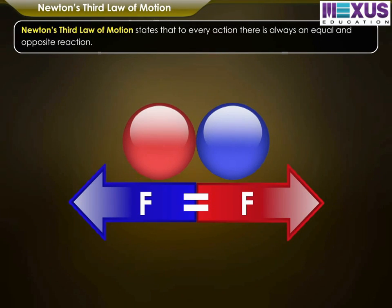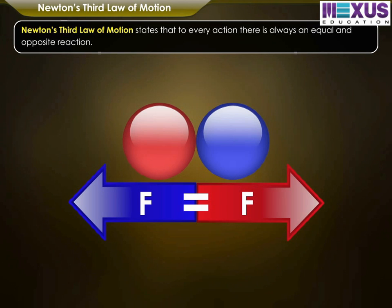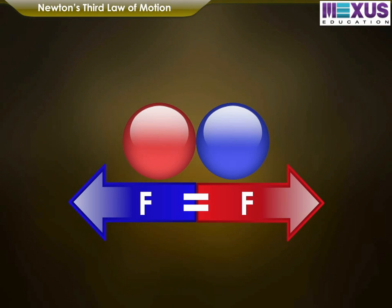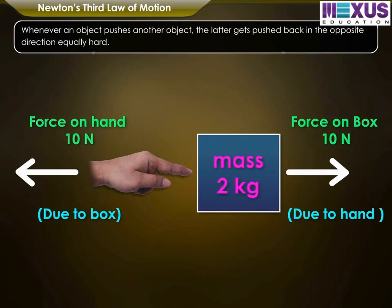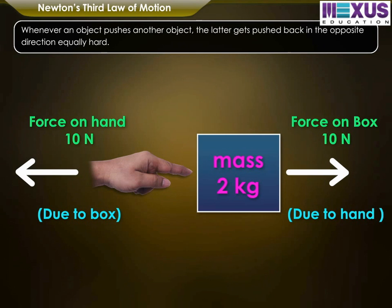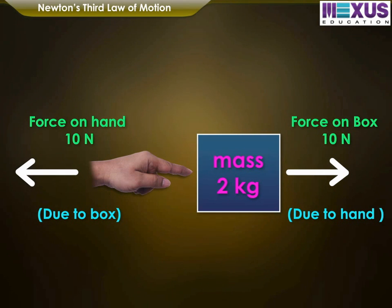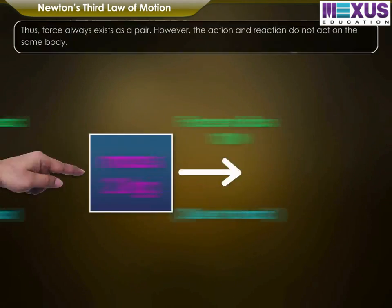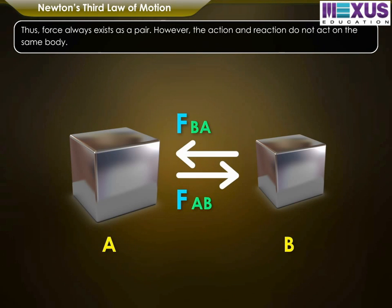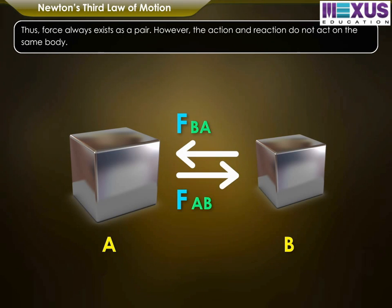Newton's Third Law of Motion states that to every action there is always an equal and opposite reaction. Whenever an object pushes another object, the latter gets pushed back in the opposite direction equally hard. Thus, force always exists as a pair. However, the action and reaction do not act on the same body.